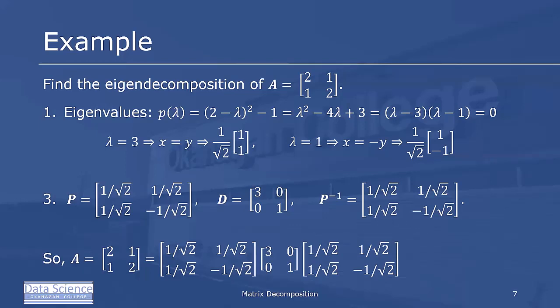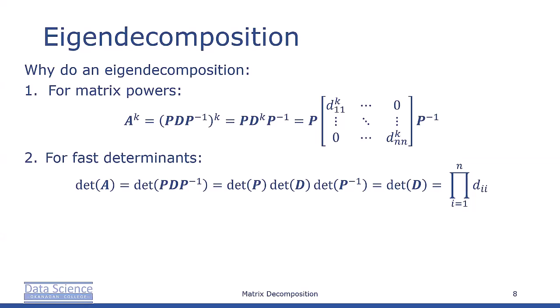And so the matrix [2, 1; 1, 2] is equal to [1/√2, 1/√2; 1/√2, -1/√2] times [3, 0; 0, 1] times [1/√2, 1/√2; 1/√2, -1/√2], and it works like this in every instance. So it's fairly quick to find the eigendecomposition of a matrix A.